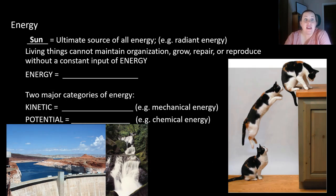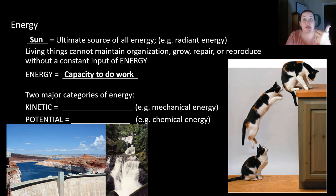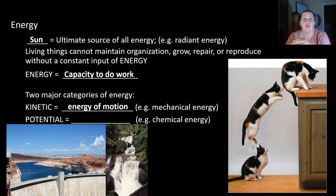So what is energy? Energy is the ability or capacity to do work. Where does this ability to do work ultimately come from? The sun. The sun is the ultimate source of all energy on planet Earth — we call that radiant energy. Living things cannot maintain their organization, grow, repair, or reproduce without a constant input of energy from the sun. There are two major categories of energy: kinetic energy, which is the energy of motion or movement, and potential energy, which is stored energy stored as chemical energy.